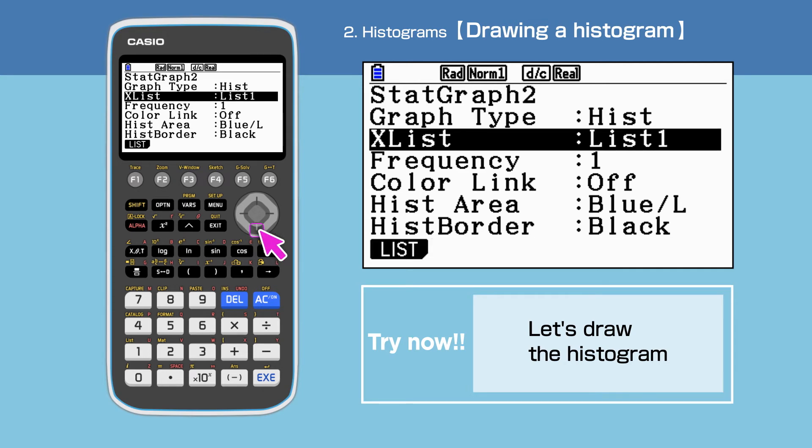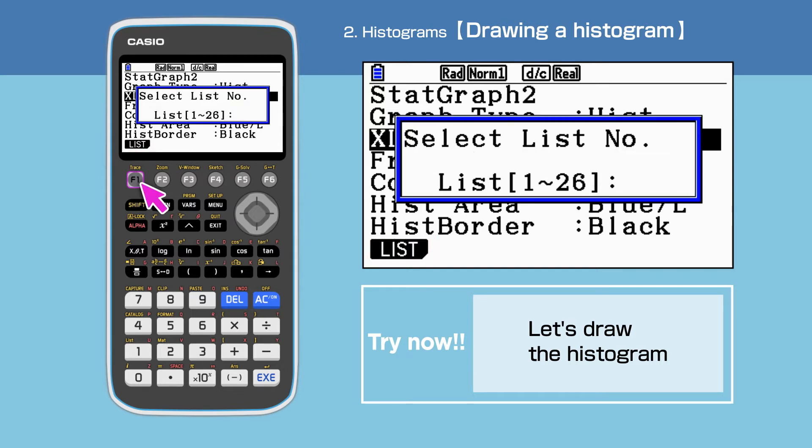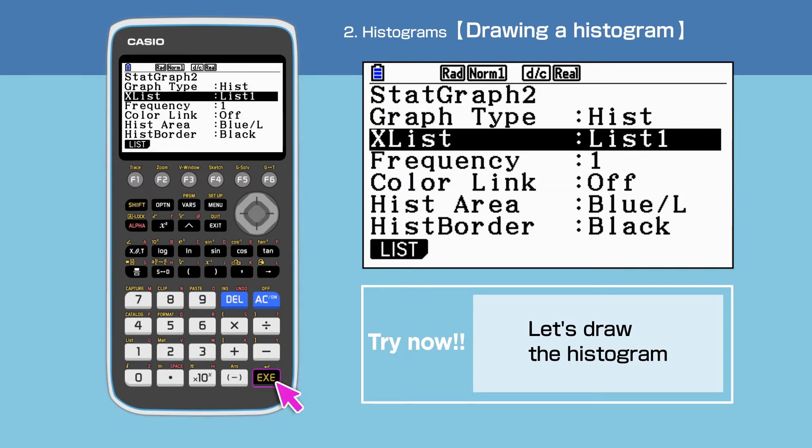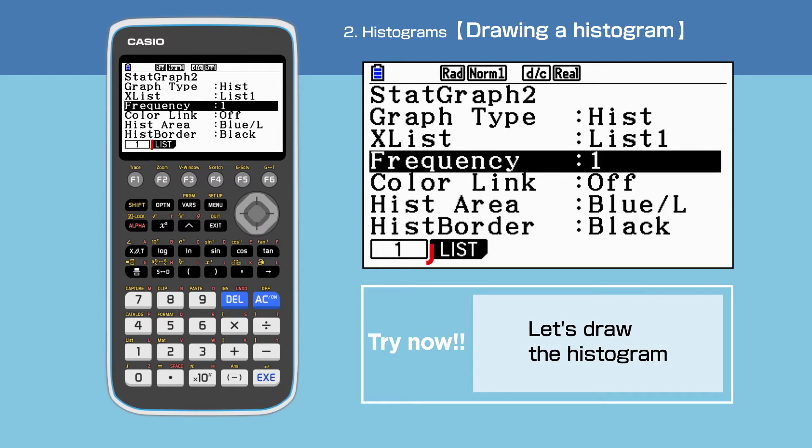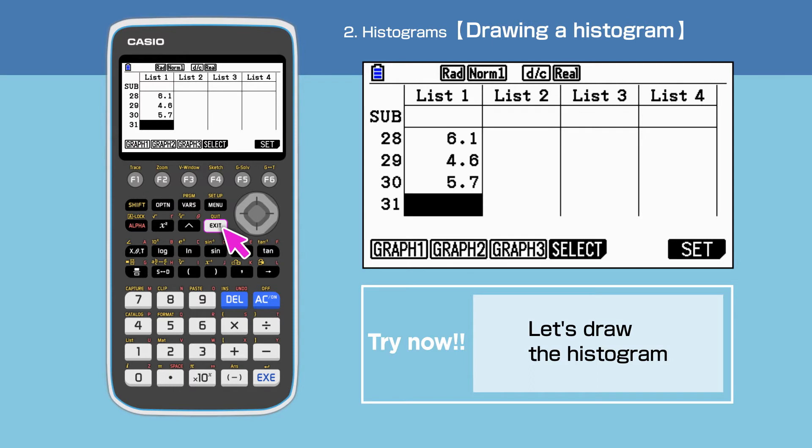For the X list, press F1, then F1 to select list 1. Set frequency to 1. Press exit to end setting up, then choose Graphic by pressing F2.